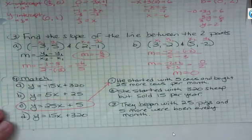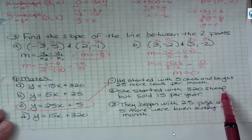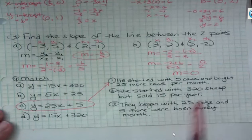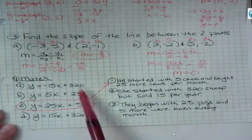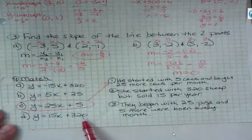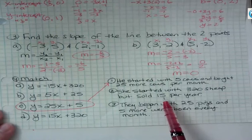Okay. In this one, she started with 320 sheep, but sold 15 per year. So in this case, she started with 320. I see two different equations that start with 320. But she's selling 15 per year. So is her herd of sheep going up or down?